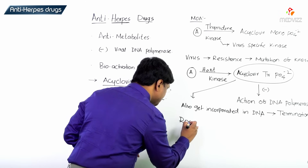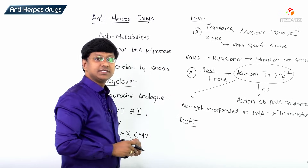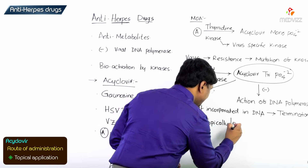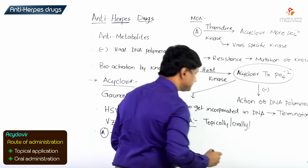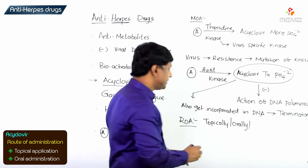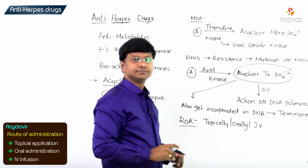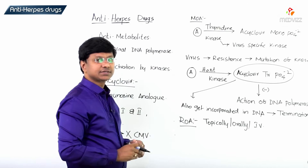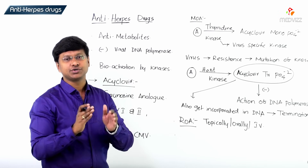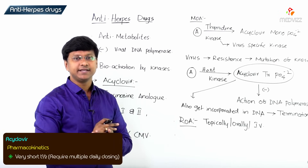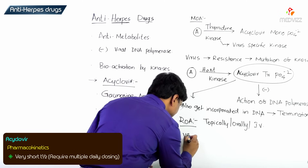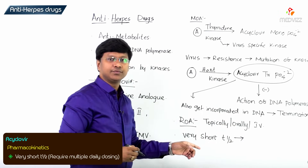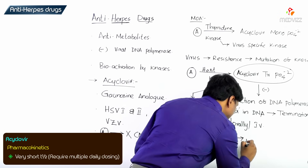Regarding the route of administration of acyclovir: it can be administered topically, orally, or intravenously. An important point is that acyclovir has a very short half-life and therefore requires multiple daily dosing.